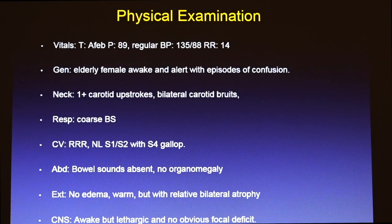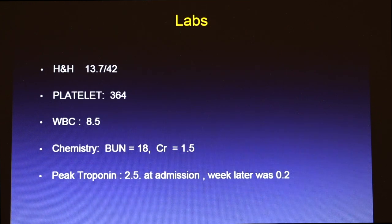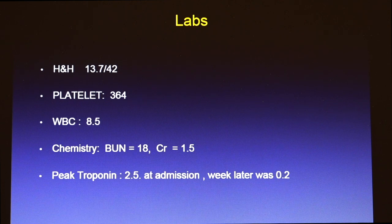Her physical exam, when I saw her about four or five days after admission, was pretty benign, except she has a carotid bruit and no neurological deficit remaining. Further evaluation showed hemoglobin of 13, hematocrit of 42, platelet count 364, white count 8.5. Her creatinine was 1.5, where she usually runs around 1.5 to 1.6 due to chronic renal insufficiency. Troponin at admission was 2.5; by the time I was consulted, it was 0.2.